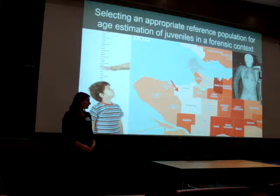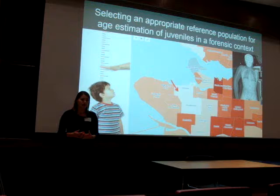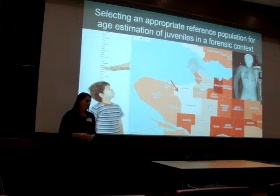When we find skeletal child remains, our best way of identifying the victim is to estimate their age at death. When we estimate age, we assume that our individual is typical of the reference population from which we developed the method. For child homicide victims, this may not be the case.